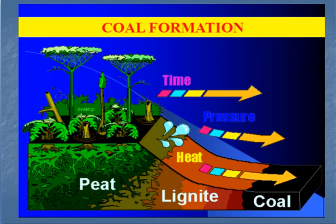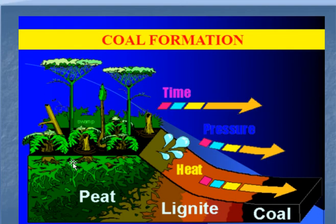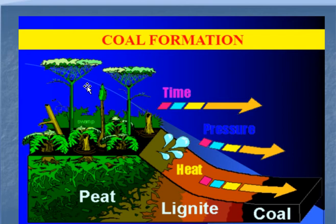Millions of years ago, when the earth was very swampy and covered with large vegetation, these plants died and were buried under water. Under water, oxygen supply is limited, so the plant materials were not decomposed completely. These partially decomposed plant materials accumulated under the soil — this is called peat, the first stage in the formation of coal. Peat is not coal; it is a precursor.